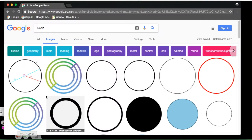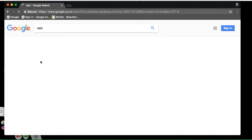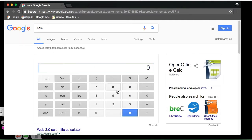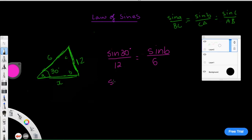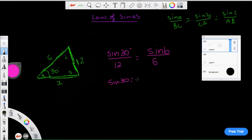What is the sine of 30? We'll go calculator. Make sure I'm in degree mode. So we'll go sine 30, 0.5. So sine of 30 divided by 12 must equal this. So we'll go sine 30 equals 0.5 divided by 12 equals sine B over 6.